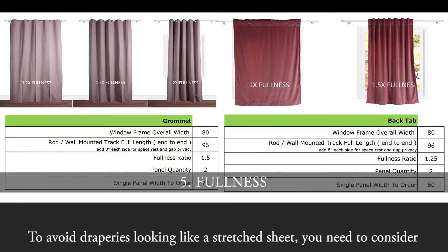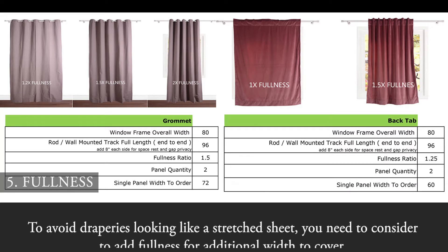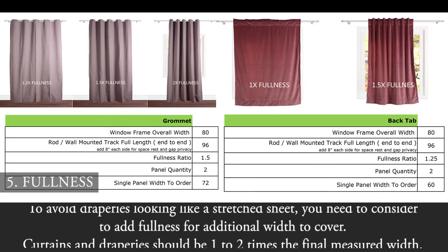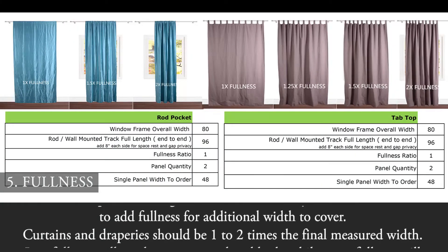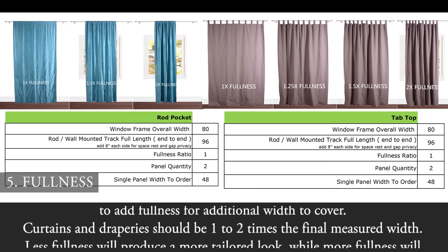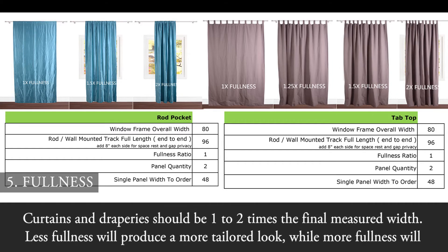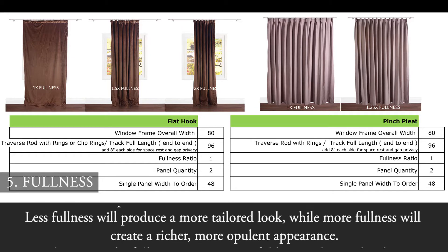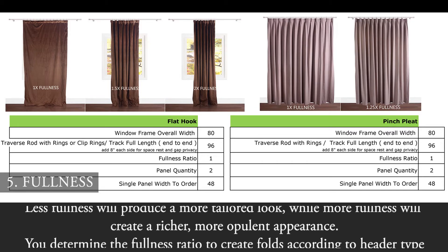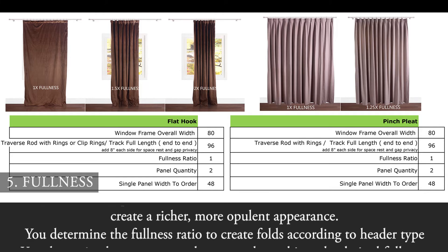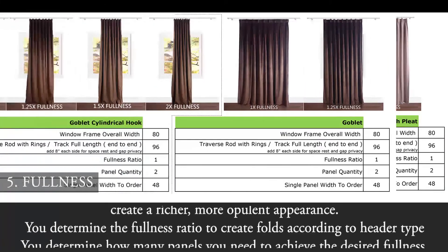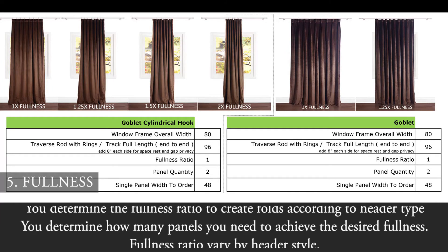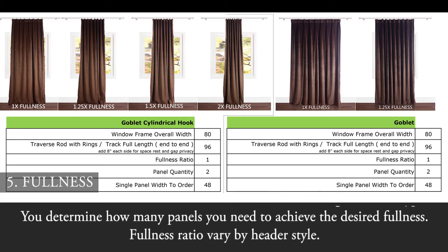5. Fullness. To avoid draperies looking like a stretched sheet, you need to consider adding fullness for additional width to cover. Curtains and draperies should be one to two times the final measured width. Less fullness will produce a more tailored look, while more fullness will create a richer, more opulent appearance. You determine the fullness ratio to create folds according to header style, and how many panels you need to achieve the desired fullness. Fullness ratio varies by header style.